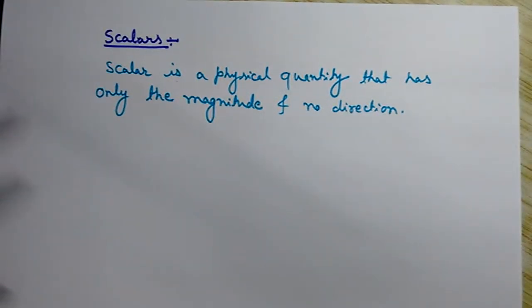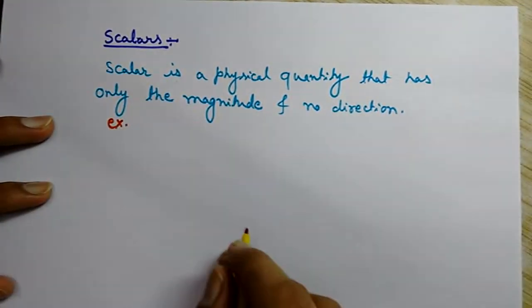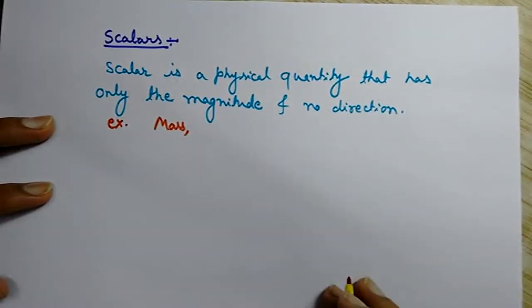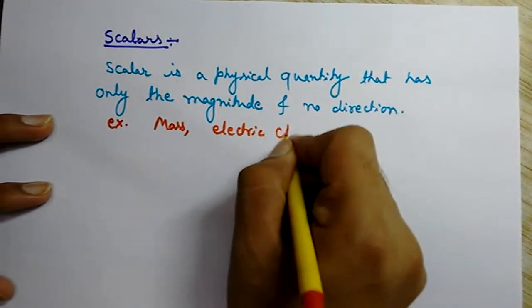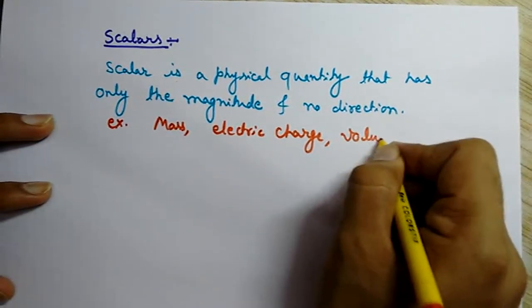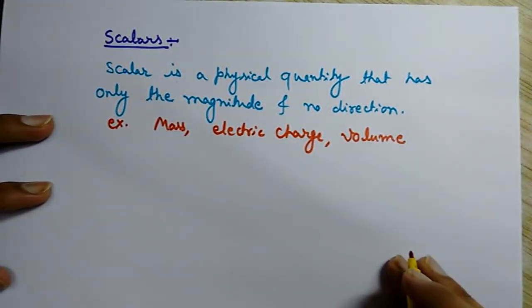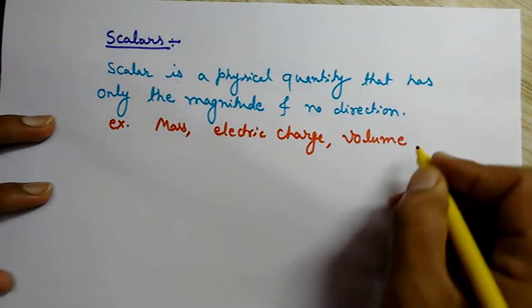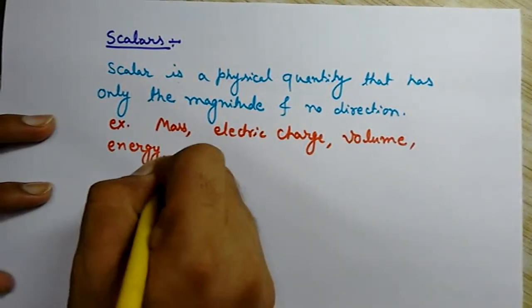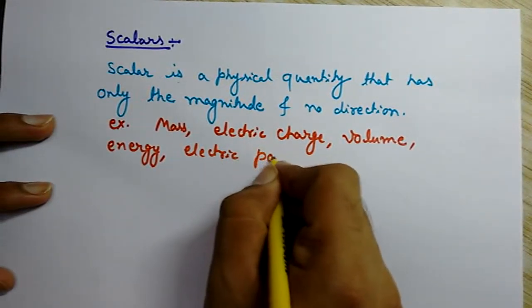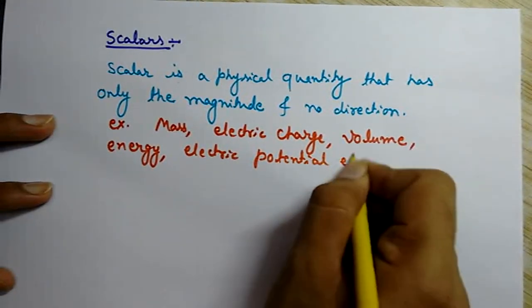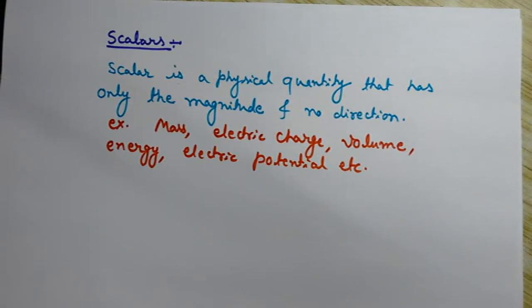Examples of scalars are mass, electric charge, volume, energy, electric potential, etc. These all have only the magnitude but no direction.